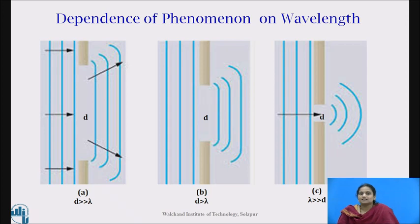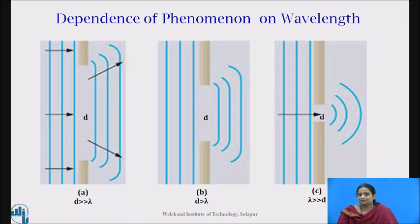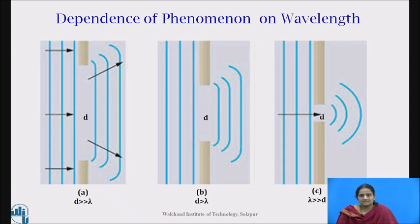Now let us see the dependence of diffraction phenomena on wavelength. The waves do not bend around the edges when the size of the aperture is large compared to the wavelength, as shown in figure A. The waves bend around the edges when the opening is small, as shown in figure C, and the aperture acts as a source of secondary wavelets. These secondary waves propagate in all directions. This effect is observable quite close to the opening when the size of the opening is very small. When the opening is large, the diffraction effect is observed at greater distances from the opening.